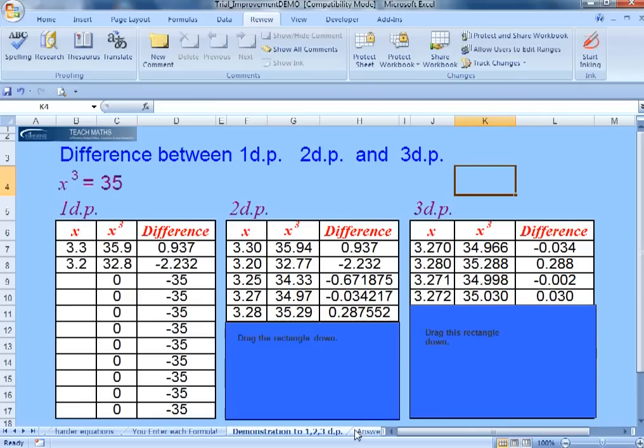The last sheet really focuses on the difference between when they ask you for a solution between one decimal place, two decimal places and three decimal places. Here's one decimal place so that would be 3.3 because the difference between 35.9 is close to 35 and 32.8.